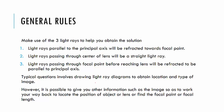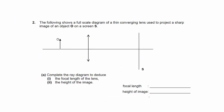A typical question would involve drawing light rays to obtain the location and type of the image. However, it's possible to be given other information such as where the image is and the type of image, so as to work your way back to locate the position of the object or lens, or even to find the focal point or focal length. Let's do some questions that are not that typical.